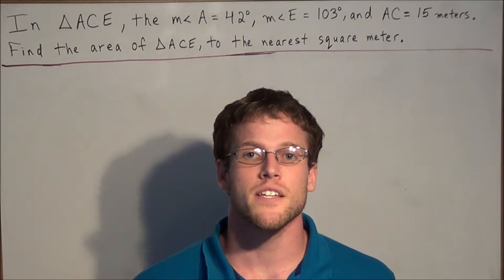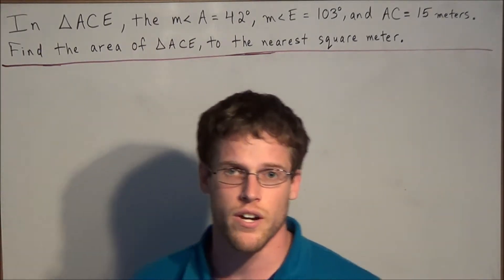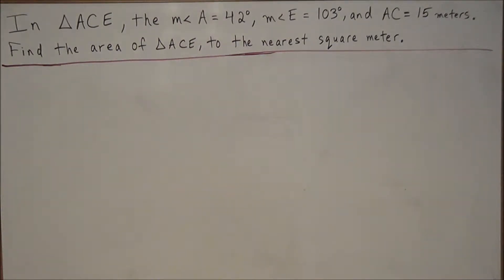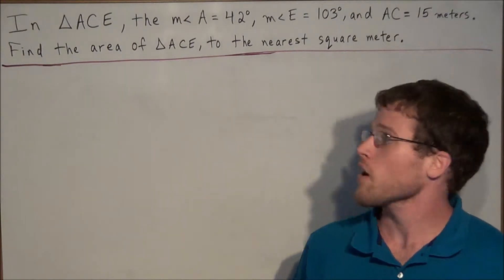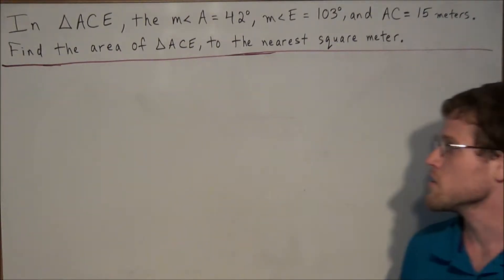Hi, my name is Mr. D, and today I want to take a look at using trigonometry to find the area of a triangle. So we have in triangle ACE, the measure of angle A equals 42 degrees, the measure of angle E equals 103 degrees, and AC equals 15 meters. And we want to find the area of triangle ACE to the nearest square meter.